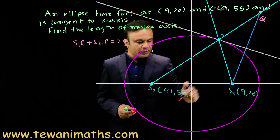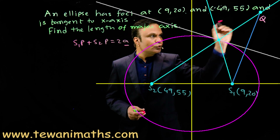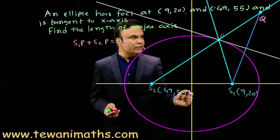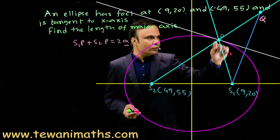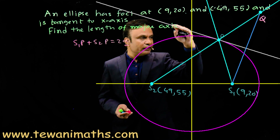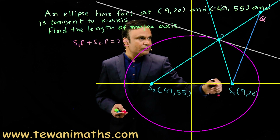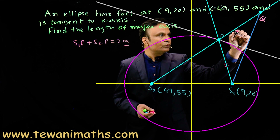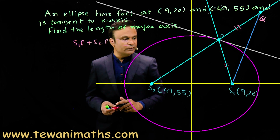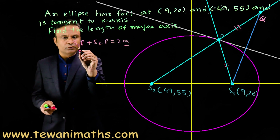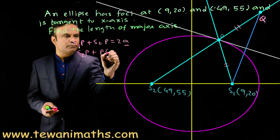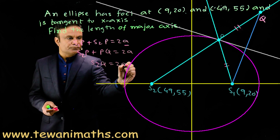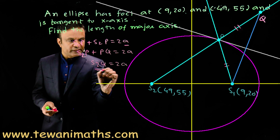So Q will lie on the reflected ray, meaning S2, P, and Q will be collinear. Triangle S1PQ is an isosceles triangle because the tangent is the angle bisector of angle QPS1 and the tangent line is perpendicular to S1Q. So S1P = PQ. Since these two lengths are equal, I can replace S1P with PQ. So S2P + PQ = 2a, which gives S2Q = 2a. Therefore the length of the major axis equals S2Q.